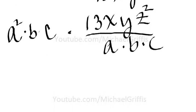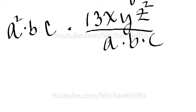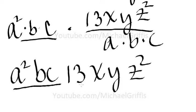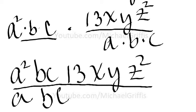Now we multiply a squared times b times c times the numerator, and that ends up becoming a squared bc times 13xyz squared all over. I'm going to write it right up underneath here.